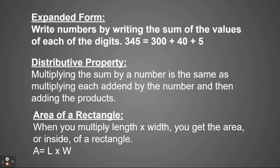Finally we need to remember what it means to find the area of a rectangle. When we multiply the length times width we get the area, and the area is the inside of a rectangle. So our formula would be area equals length times width. We're going to be using all three of those terms to find the product of our multiplication problem.